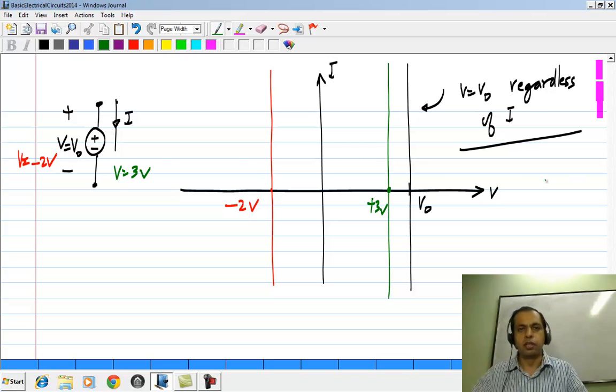This is what the characteristic of a voltage source looks like graphically. This voltage source will be used in circuits to establish a certain voltage between some given terminals.